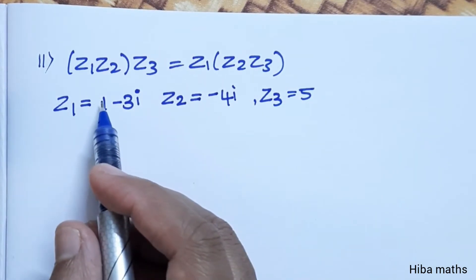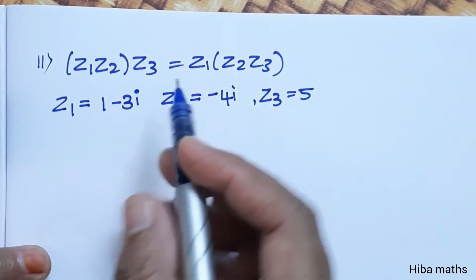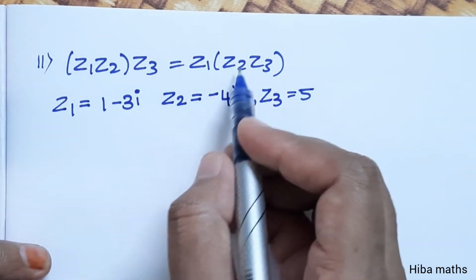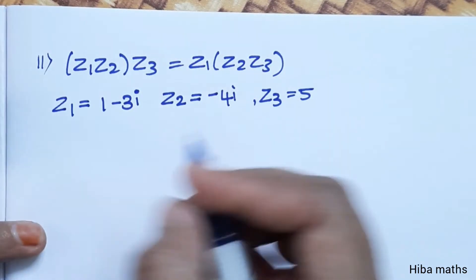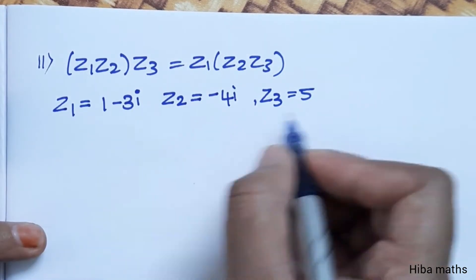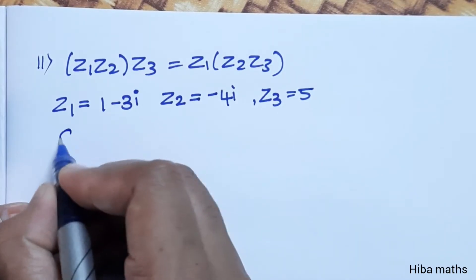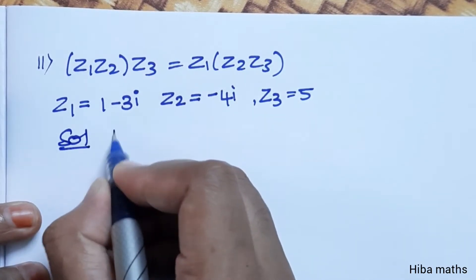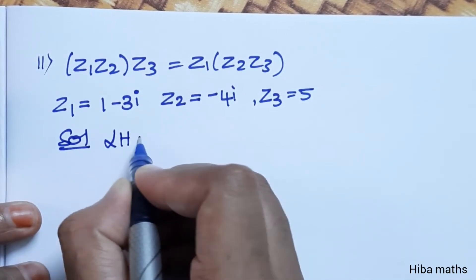Second part: z1 into z2 into z3 is equal to z1 into z2 into z3. Now what is z1 into z2 into z3? Solution — first, LHS.